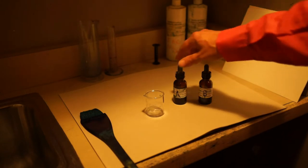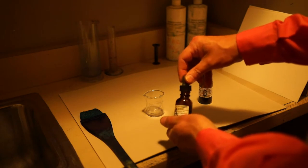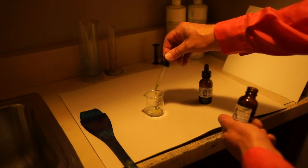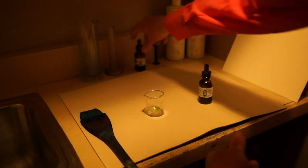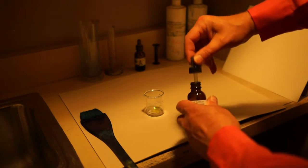To print a 4x5 negative, we'll want about 10 drops of each chemical. Here's our 10 drops of solution A and 10 drops of solution B.